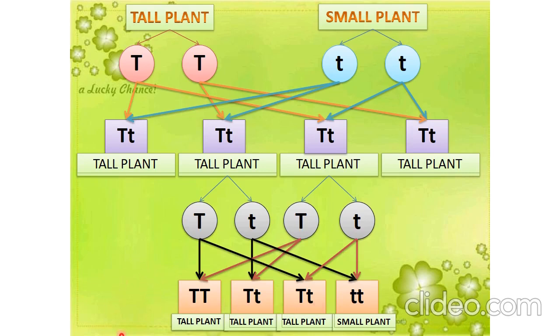This is a Punnett square. You have to make the Punnett square with one set of traits on one side and another set on the other side. This is homozygous tall, this is heterozygous tall, and this is homozygous dwarf or short plant.